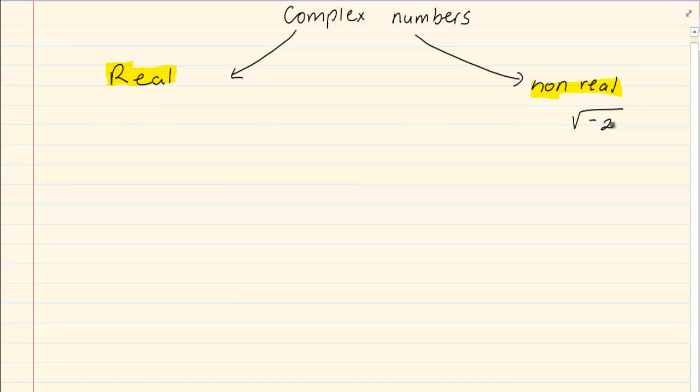Non-real numbers are numbers that cannot be solved. Example, the square root of negative 2. The reason for this is if you take 2 squared, you end up with a positive 4. But if I take negative 2 squared, I also end up with a positive 4.